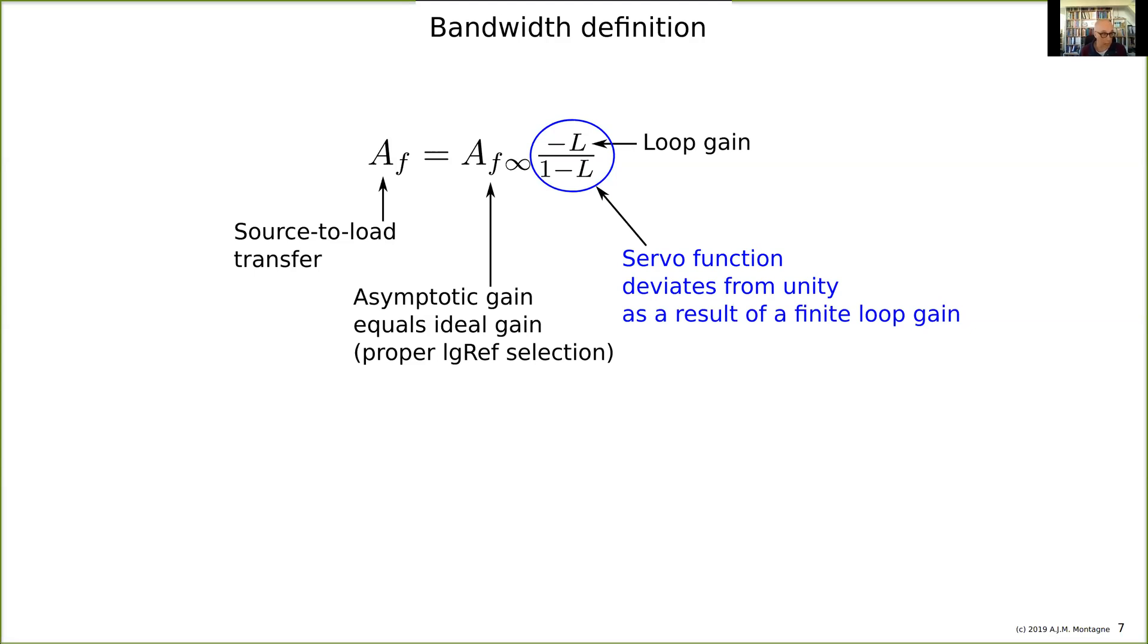And then the question could be, what is the bandwidth of the amplifier? Well, the desired filter characteristic of the amplifier we can design in the ideal gain.